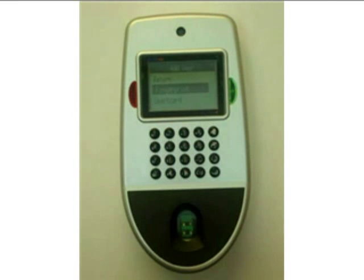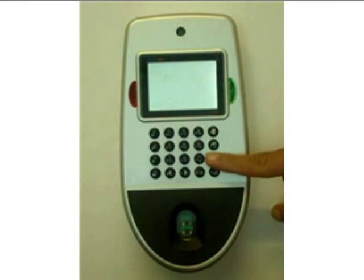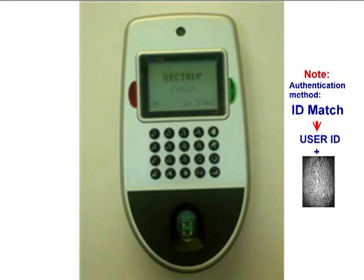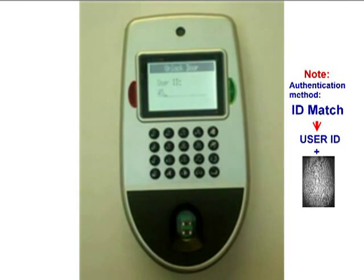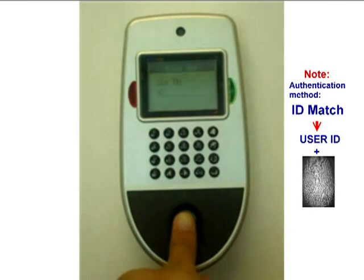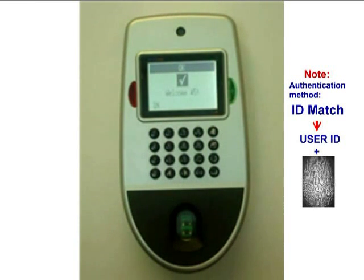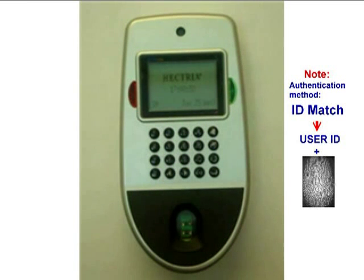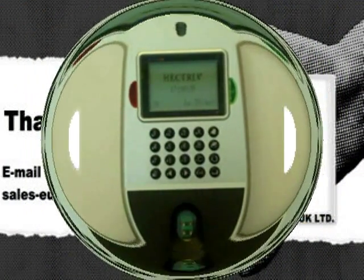Now we can check whether the fingerprint template is properly registered against user ID 45 or not. For this, we will go to the main screen and try to log in the user. User ID was 45, so we will enter 45 and then put our finger on the reader. You can see that ID 45 was registered properly with its fingerprint template.